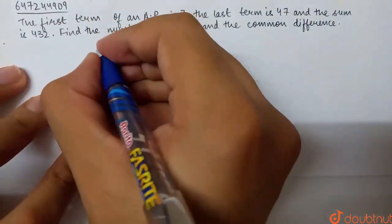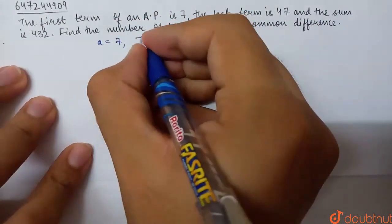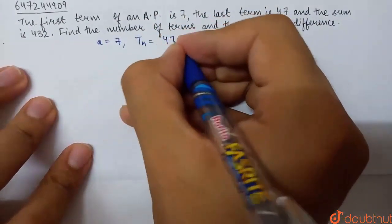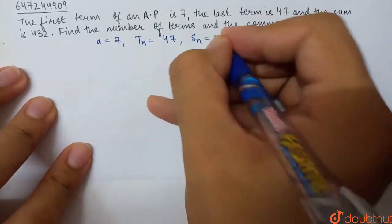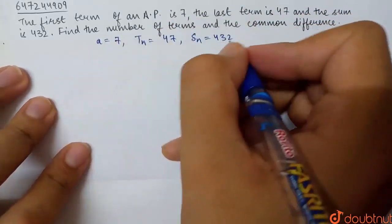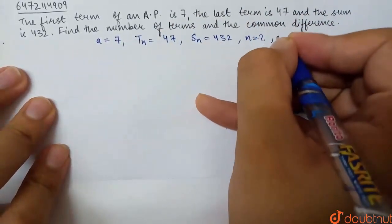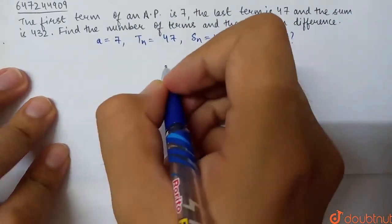The first term a is 7, the last term TN is 47, and sum of first N terms SN is 432. We have to find the number of terms N and common difference D.